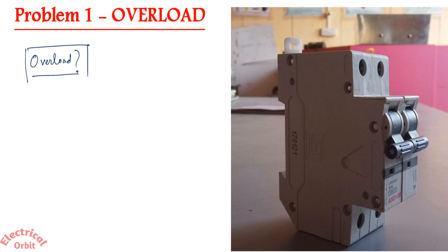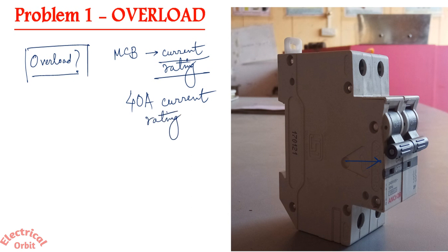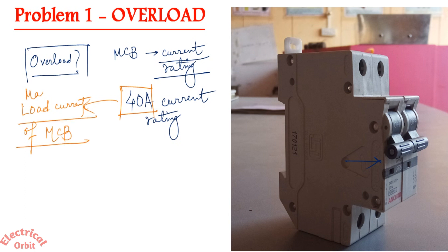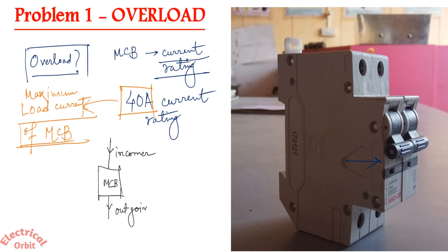What is overload? Every MCB has a current rating. Suppose this is an MCB of 40 ampere current rating, so this 40 ampere is called the maximum load current of the MCB. If you have connected this MCB — here is the incomer and the outgoing terminal — the maximum current that can flow through this MCB is 40 ampere.